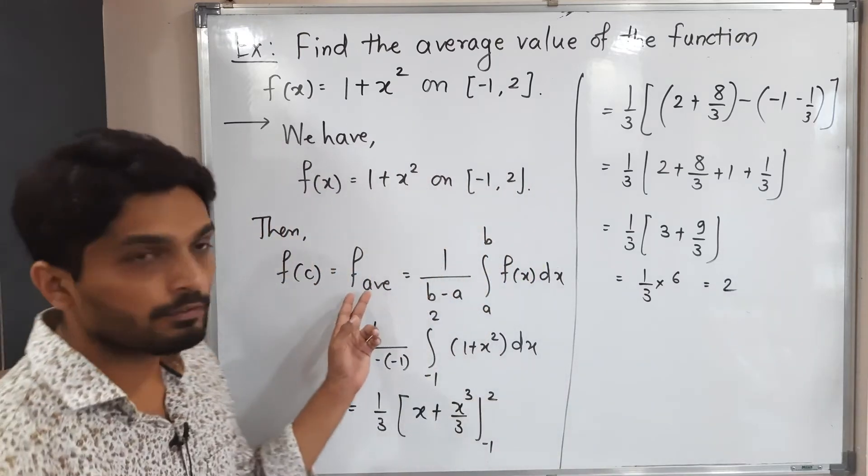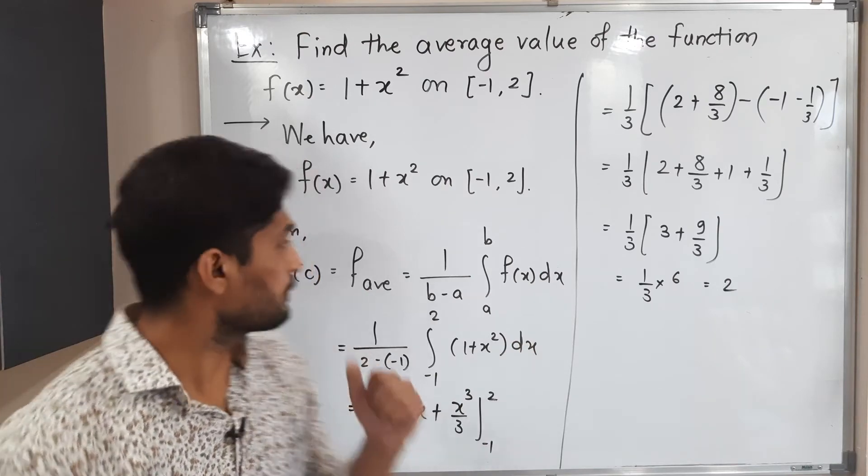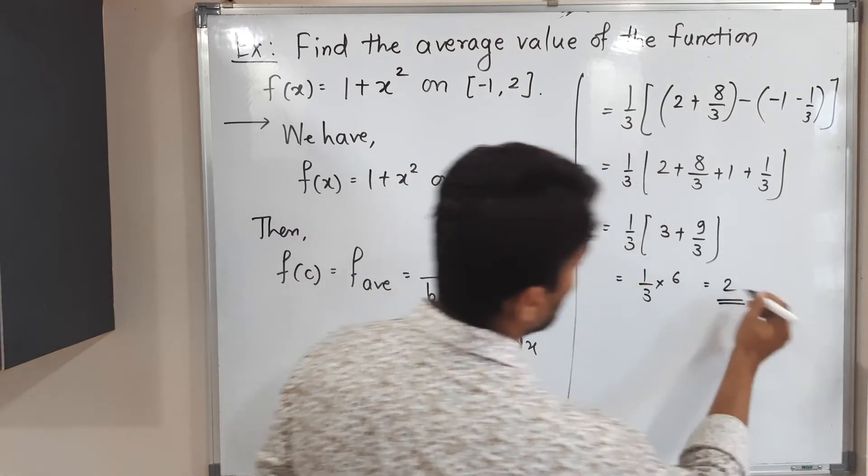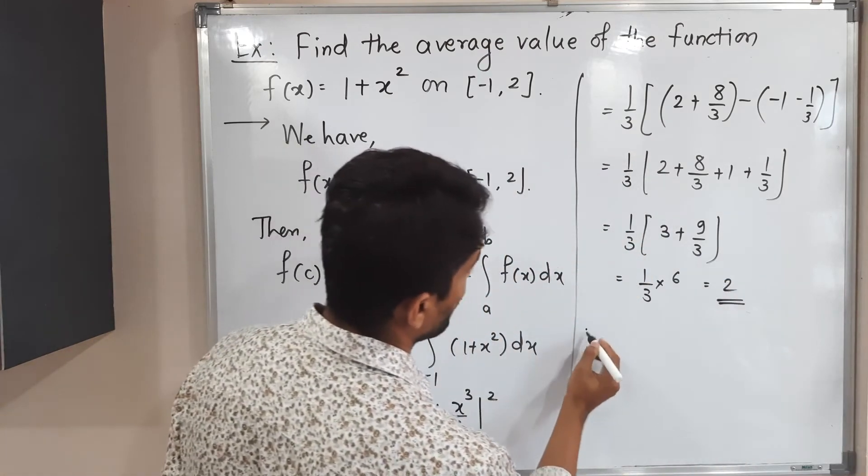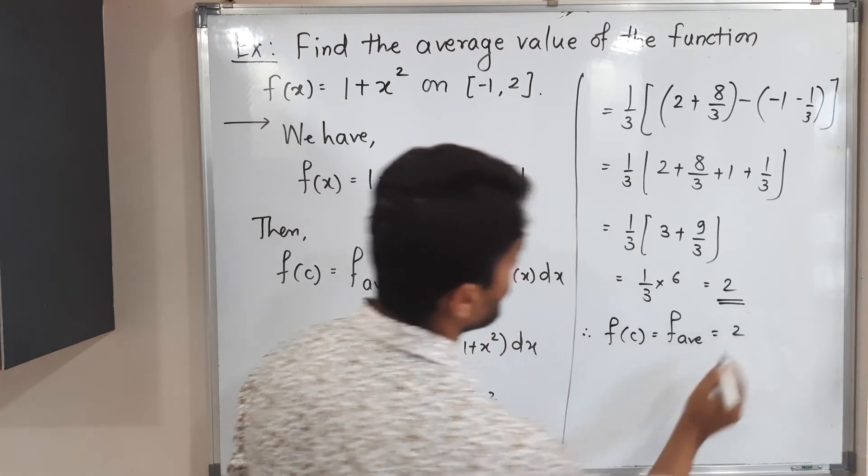So what is the average value of f? 2. So now we have to find a point c where the function has its average value. Let us do that thing also. This is our average value. So therefore f(c) is equal to f average which is equal to 2.